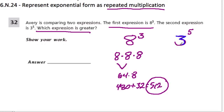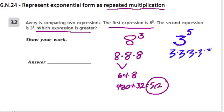Let's see 3 to the 5th. I think this will be larger because the exponent is two orders higher than 8 to the 3rd, and the exponent really matters — it really affects the growth of the number. So: 3 times 3 times 3 times 3 times 3. Now, 3 times 3 is 9, and then times 3 times 3 times 3.